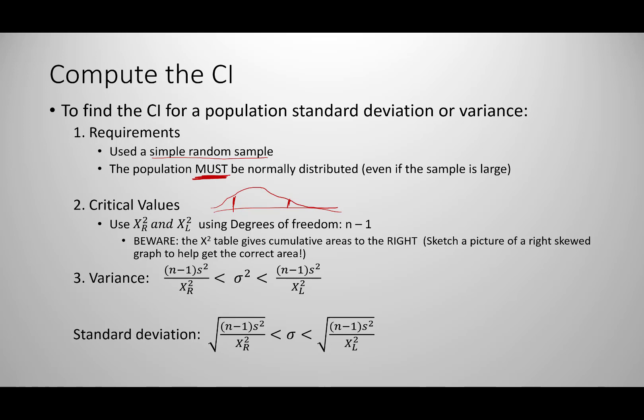Make sure when using the chi-squared table that it gives you cumulative areas to the right — some tables we've used in past videos gave areas to the left, but chi-squared is always the cumulative area to the right. It's very important to sketch a picture of your diagram first, place your information on it, and then use that to find the correct critical value. On the diagram, the chi-squared right value is on the right side and the chi-squared left value is on the left side. Once those are found, we can compute our confidence interval, and because the distribution is right-skewed we calculate each limit individually.